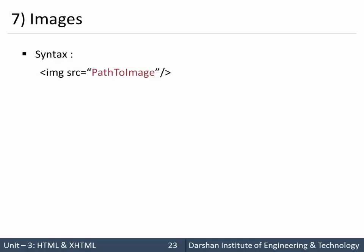The syntax for the image tag uses IMG with the 'src' attribute to specify the path to the image. This tag is self-closing — we don't write a separate closing tag like '&lt;/img&gt;'; instead we just add a forward slash at the end of the opening tag. The 'src' attribute is compulsory since we must specify which image to display. Like anchors, we can use either an absolute or relative path.